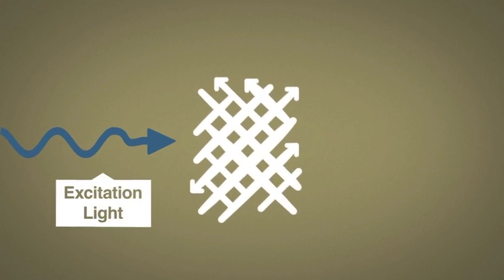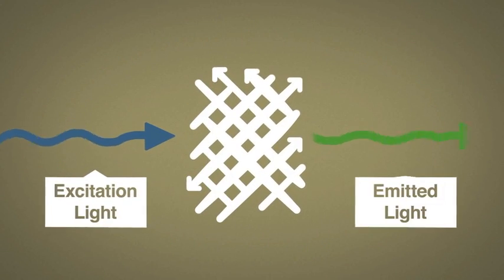Fluorescent molecules absorb light of a certain color and then emit light of a redder color from the spectrum. For example, a molecule may absorb blue light and emit green light.